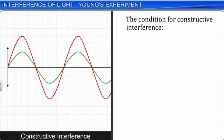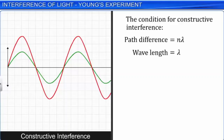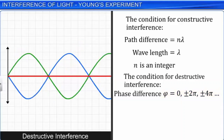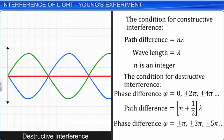For constructive interference, the path difference must be equal to nλ, where λ is the wavelength of light used and n is an integer. In terms of the phase difference φ, the condition for constructive interference is given by φ equal to 0, or ±2π, or ±4π, and so on. For destructive interference, either the path difference is equal to (n + ½)λ, or the phase difference φ is equal to ±π, or ±3π, and so on.